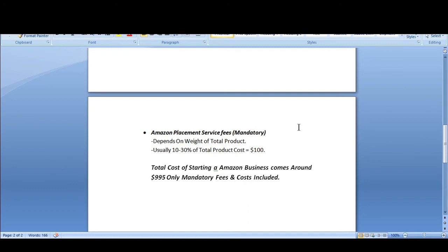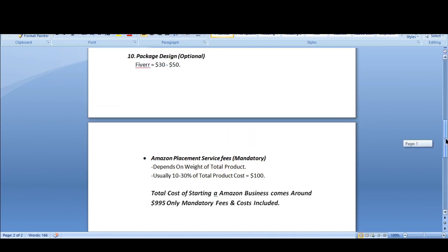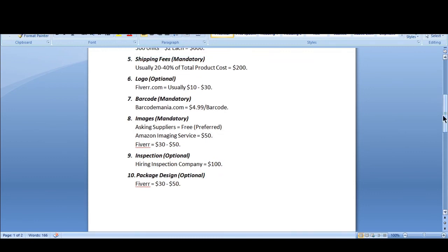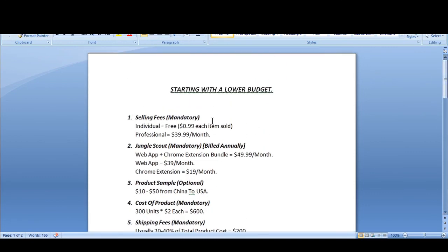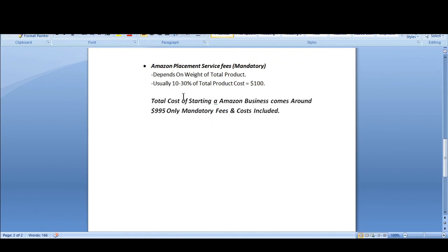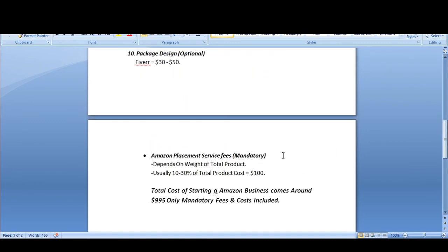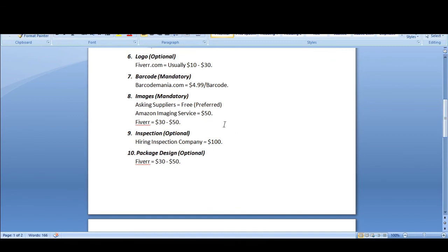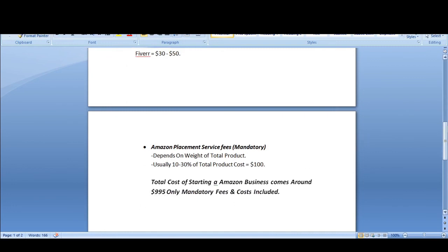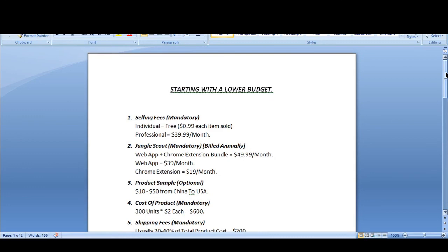So these are the fees — some mandatory, some optional. Following only the mandatory fees and costs I recommended, the total cost of starting an Amazon FBA business comes to around $995. I only included mandatory fees in this total and haven't added optional costs. So hopefully you now understand how you can start with a lower budget of just under $1,000.